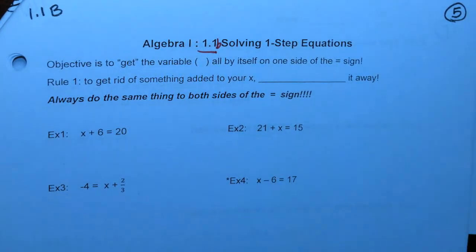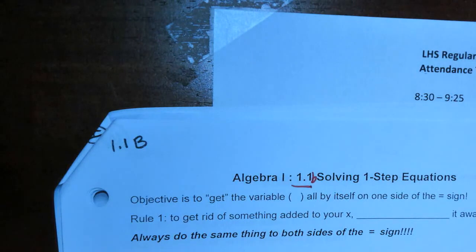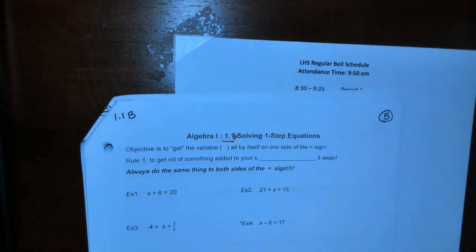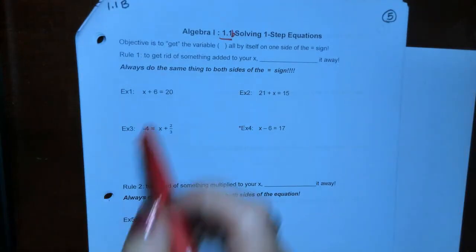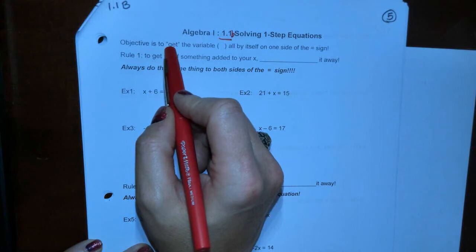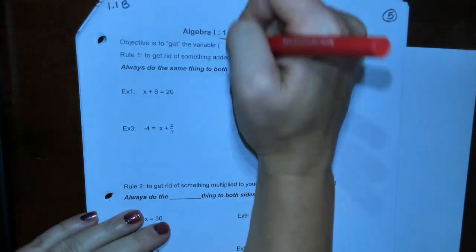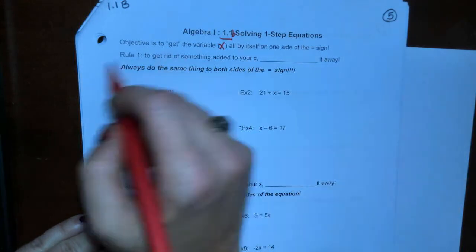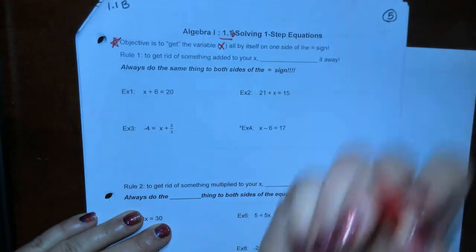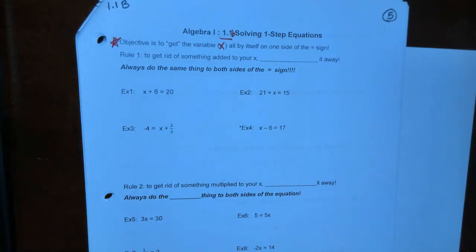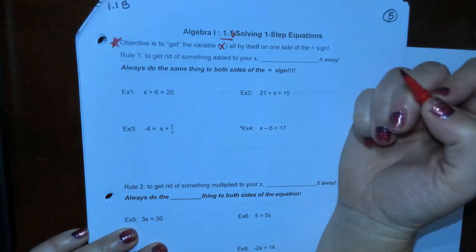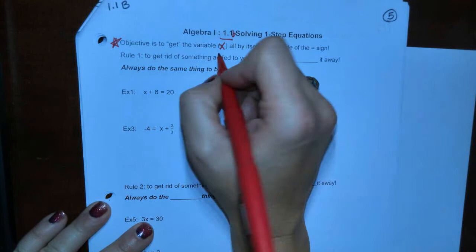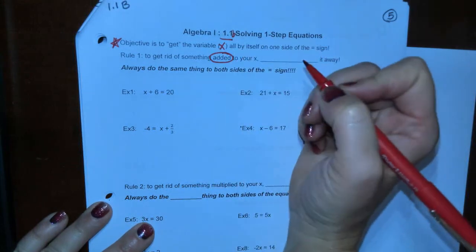This is Wednesday night. The objective is to get the variable, which is x, all by itself on one side of the equal sign. That's always our goal. Rule number one: to get rid of something added to your x, your x has to be alone and all by itself. If something is being added to it, you have to do the opposite.